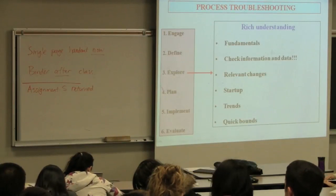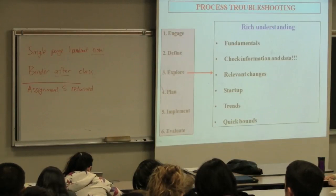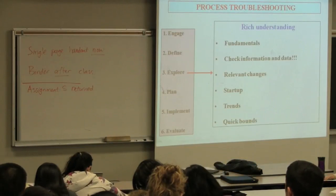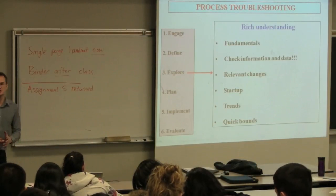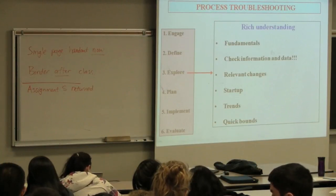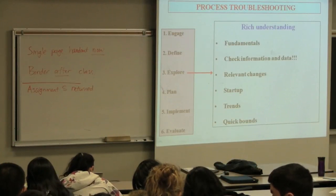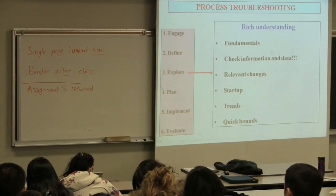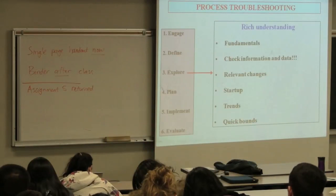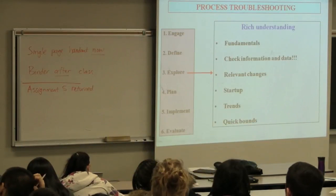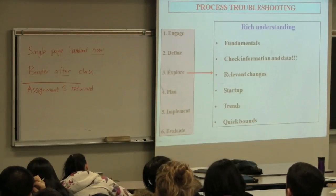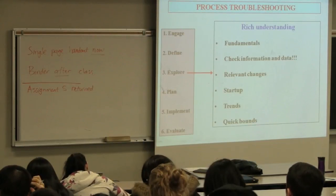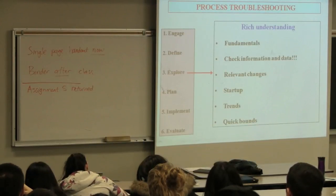So what the explore phase is about is the following. This is really where I think the McMaster approach to troubleshooting is unique. You are thinking about what are the fundamentals in this process. What are the things you've learned about in chemical engineering that govern this process's operation? What are the first things that come to mind? Which topics would you want to draw on? Which textbooks would you look at if you wanted to get in-depth of this problem? What are the fundamentals that apply?